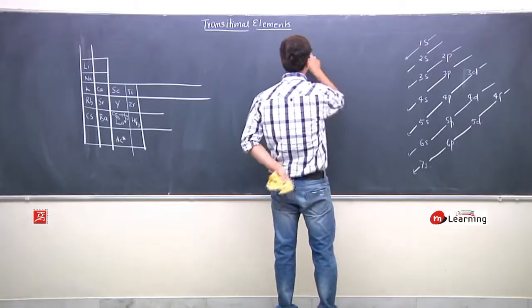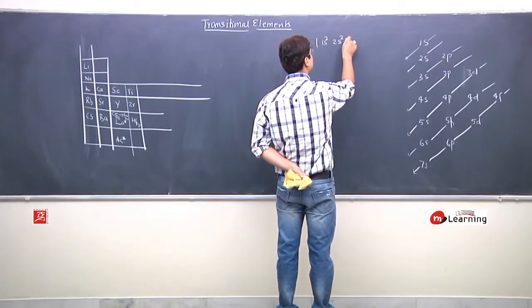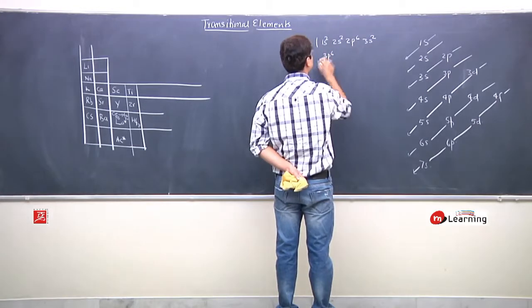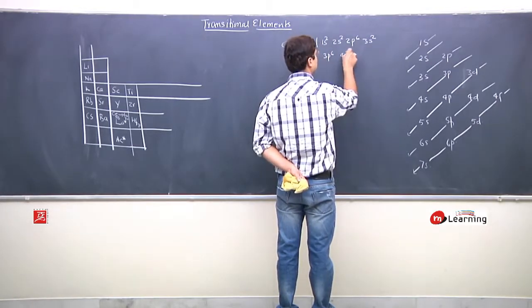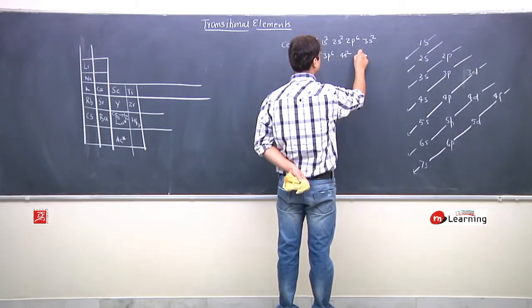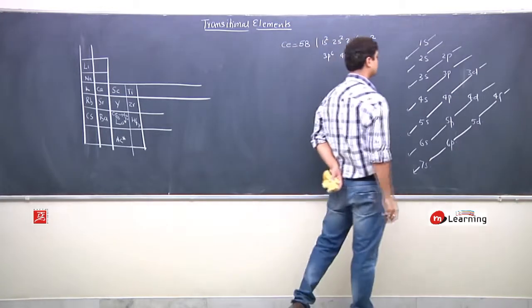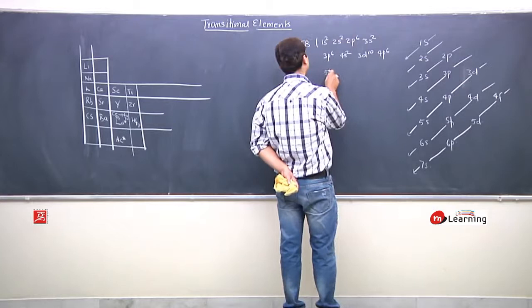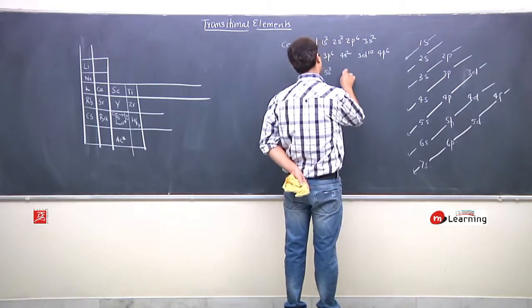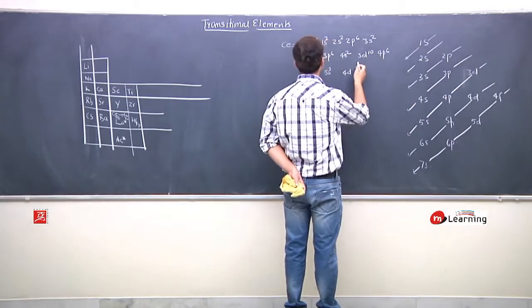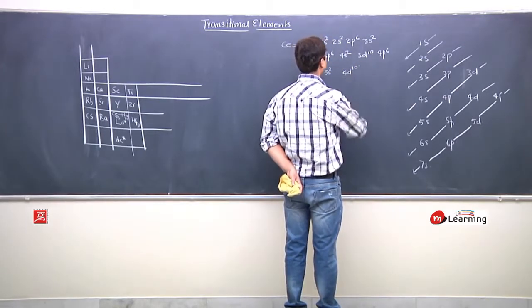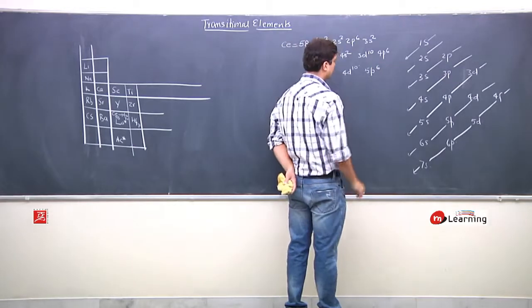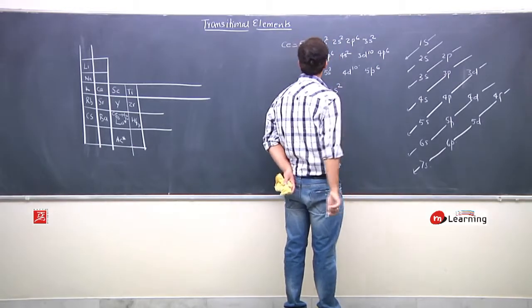Electron configuration 58 Cerium: 1s2, 2s2, 2p6, 3s2, 3p6, 4s2, 3d10, 4p6 (36 electrons), 5s2 (38), 4d10 (48), 5p6 (54), 6s2 (56).